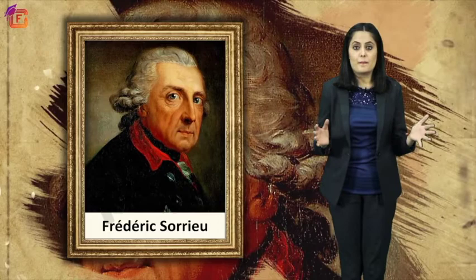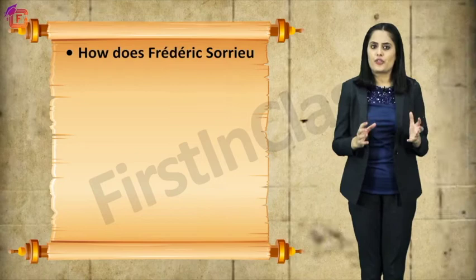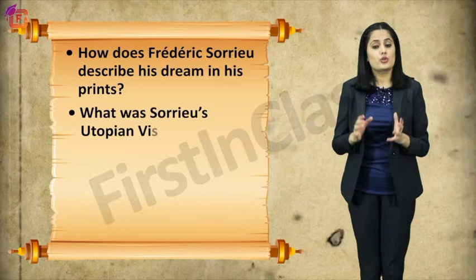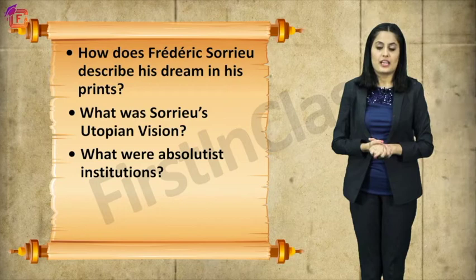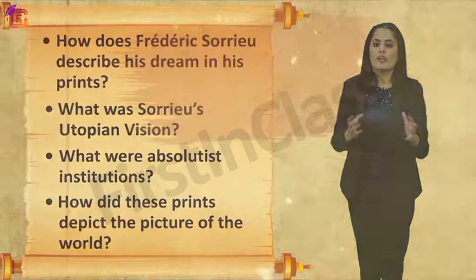In today's video, we'll be discussing Frederick Sorrio's dream of a world made up of democratic and social republics. We'll look at how Sorrio describes his dream in his prints, what his utopian vision was, what absolutist institutions were, and how these prints depict the picture of the world.